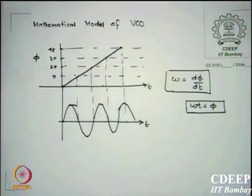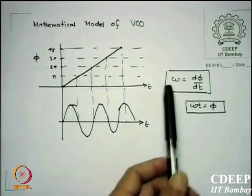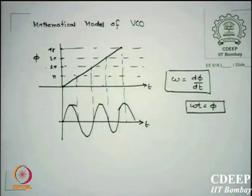Now for the mathematical model of VCO: if we write V = Vm·sin(ωt) or cos(ωt), then ωt has units of phase. So one can say that dφ/dt is essentially ω — the rate of change of phase is the angular frequency.